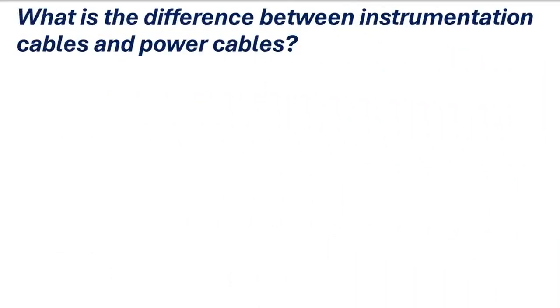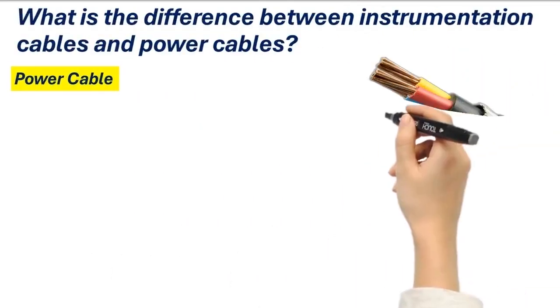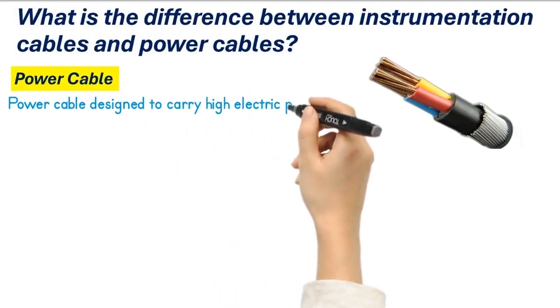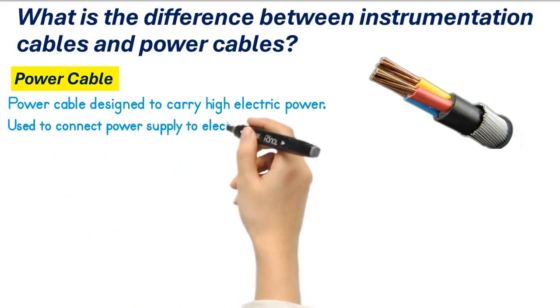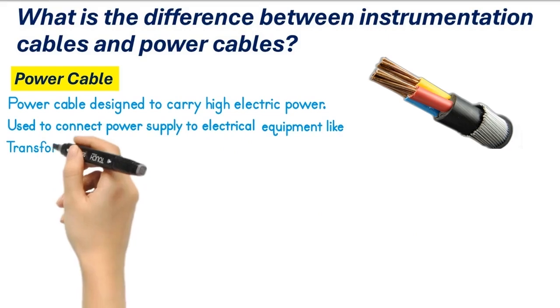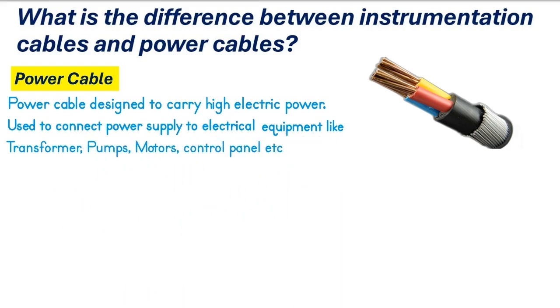What is the difference between instrumentation cables and power cables? The electrical or power cables are designed to carry high electric power. These cables are used to connect power supply to electrical equipment like transformers, pumps, motors, electrical control panels, and other electrical systems. Power cables are good for handling high voltage and high current.